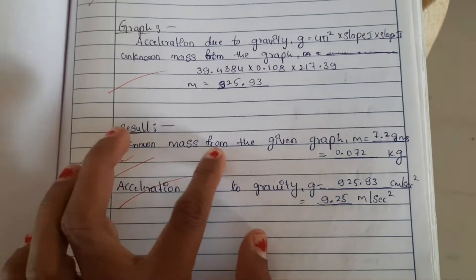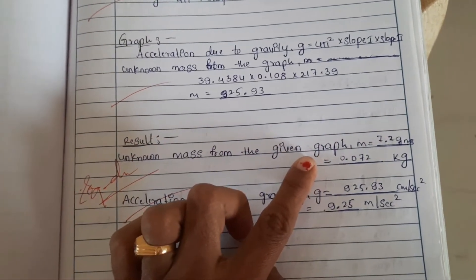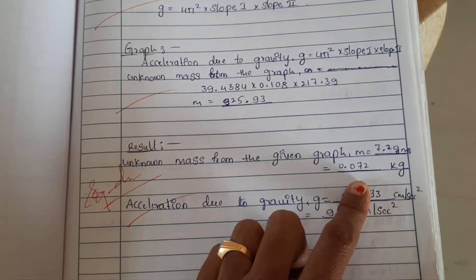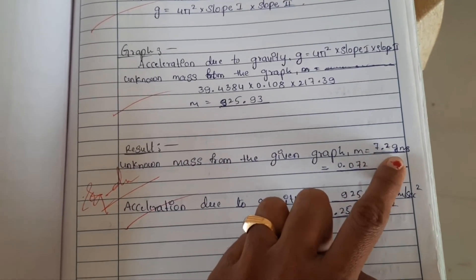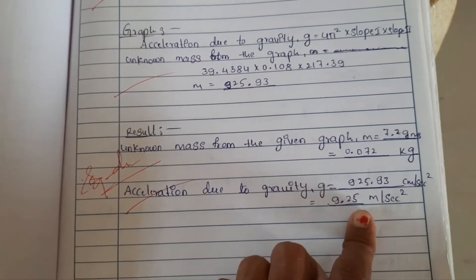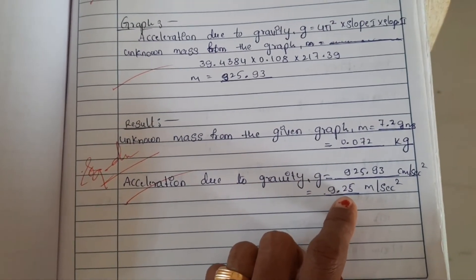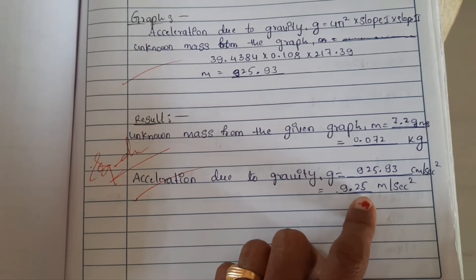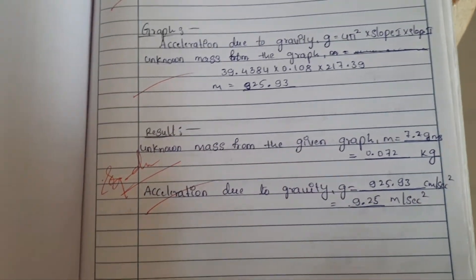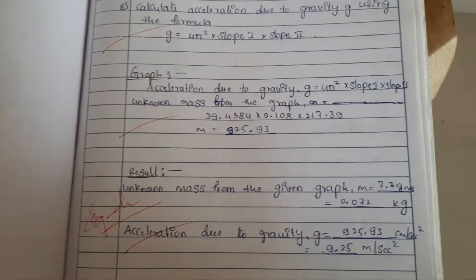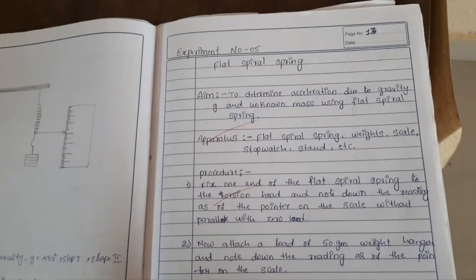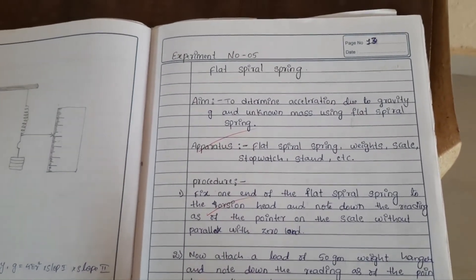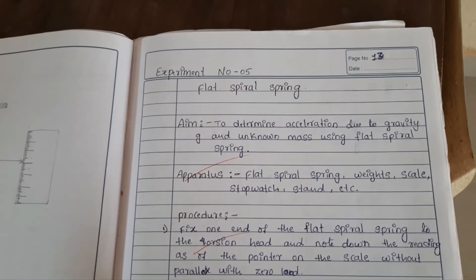In the result, the unknown mass from the graph is approximately 0.072 kg or 72 grams, and the acceleration due to gravity is approximately 9.25 m/s², which is close to the standard value of 9.8 m/s². This is how you perform this experiment. I hope this video is helpful — please like, share, and subscribe. Thank you for watching.